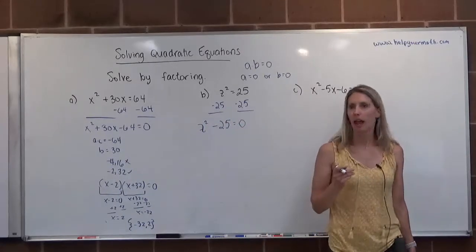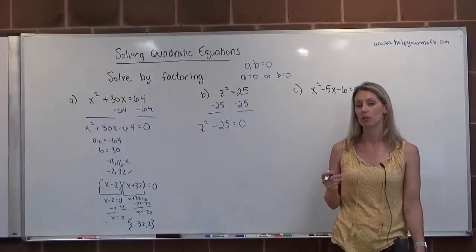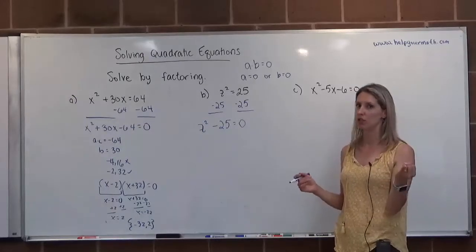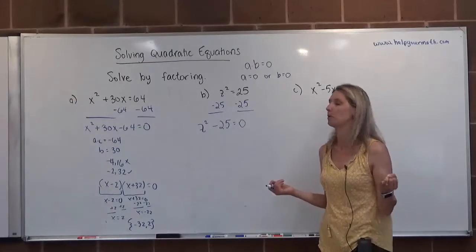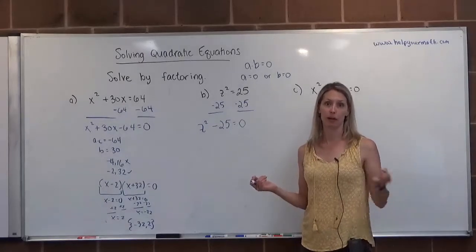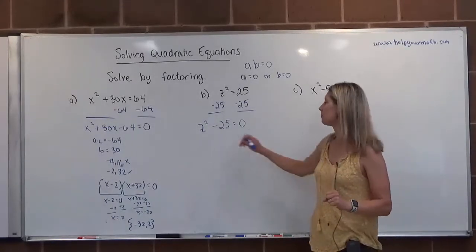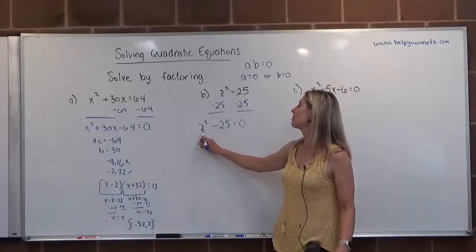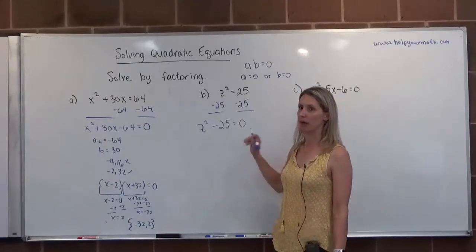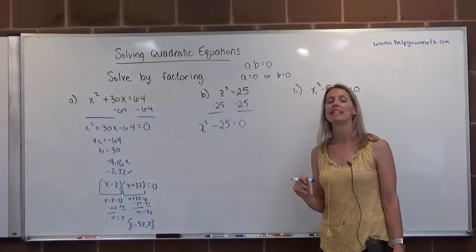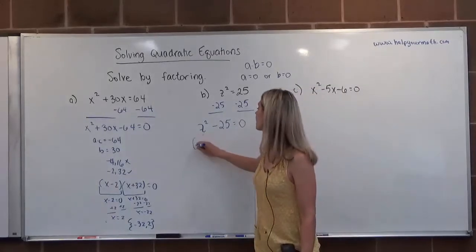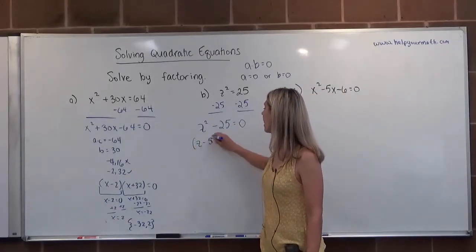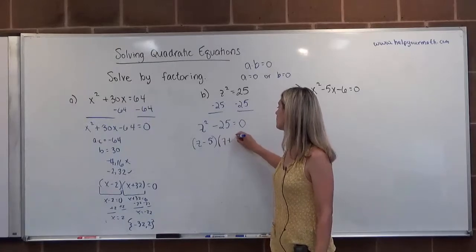This is a binomial, which means it's one of two things. Either there's a GCF that we're going to factor out, which there isn't, it would be one, or it's a difference of squares or a difference of cubes. So I guess there's four things, but two are more common. This is a perfect square, this is a perfect square, this is a difference, so this is a difference of squares. This is going to factor into z minus 5 times z plus 5.